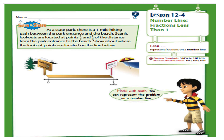Now we begin Lesson 12.4, page 628. The problem states: at a state park there is a one-mile hiking path between the park entrance and the beach. Scenic lookouts are located at one-third and two-thirds of the distance from the park entrance to the beach. Show where the lookout points are located on the line.